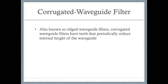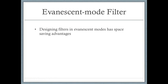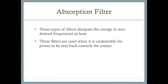The third type is the corrugated waveguide filter, also known as the ridged waveguide filter. Corrugated waveguide filters have teeth that periodically reduce the internal height of the waveguide. The fourth type is the evanescent mode filter, which has space-saving advantages. The last type is the absorption filter, which dissipates the energy of non-desired frequencies as heat and is used when it is undesirable for power to be reflected back toward the source.